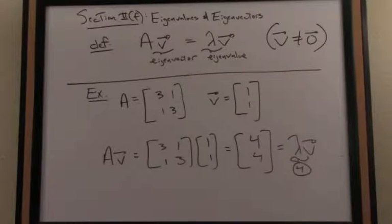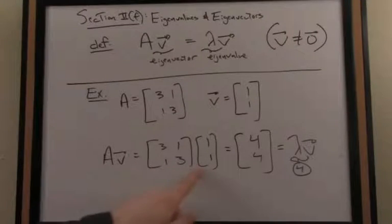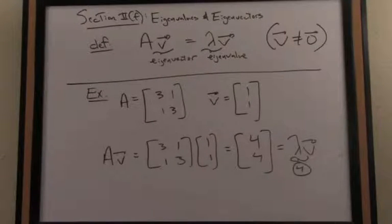So the bottom line is to be an eigenvector: when I multiply on the left by my matrix, the action of this multiplication results in a scaling of my eigenvector, in this case by the value 4.